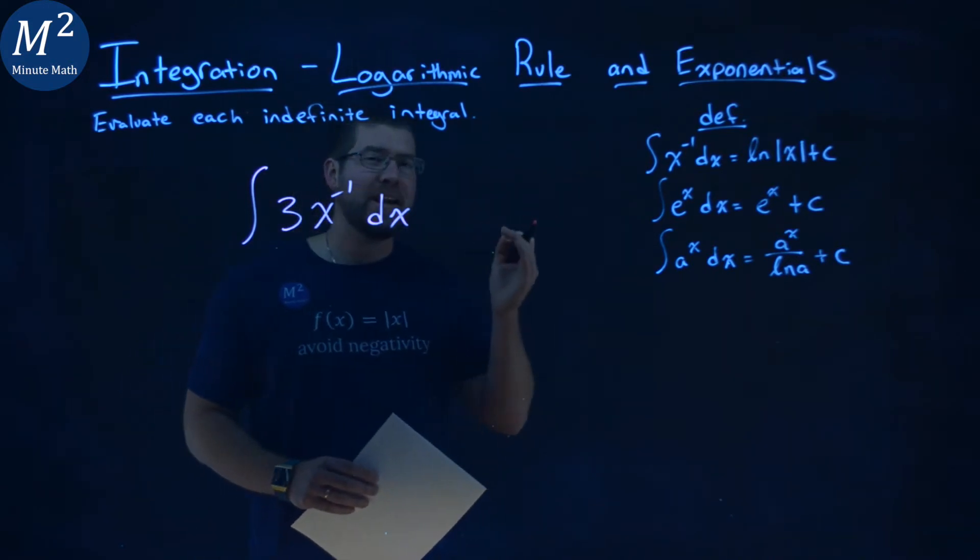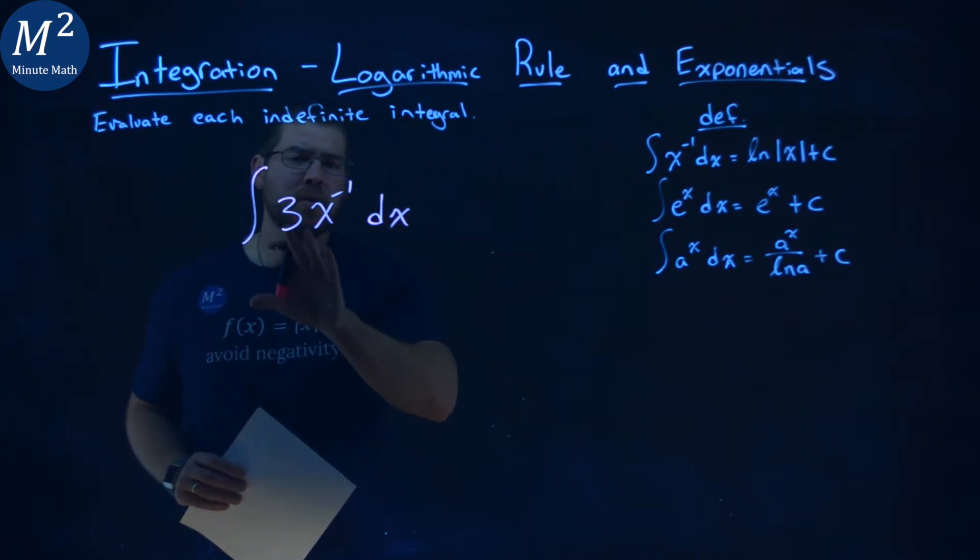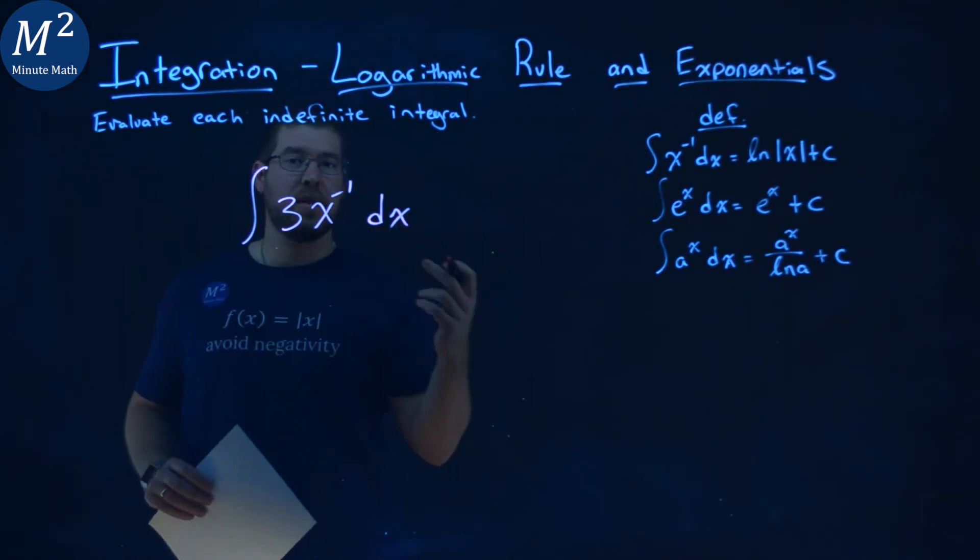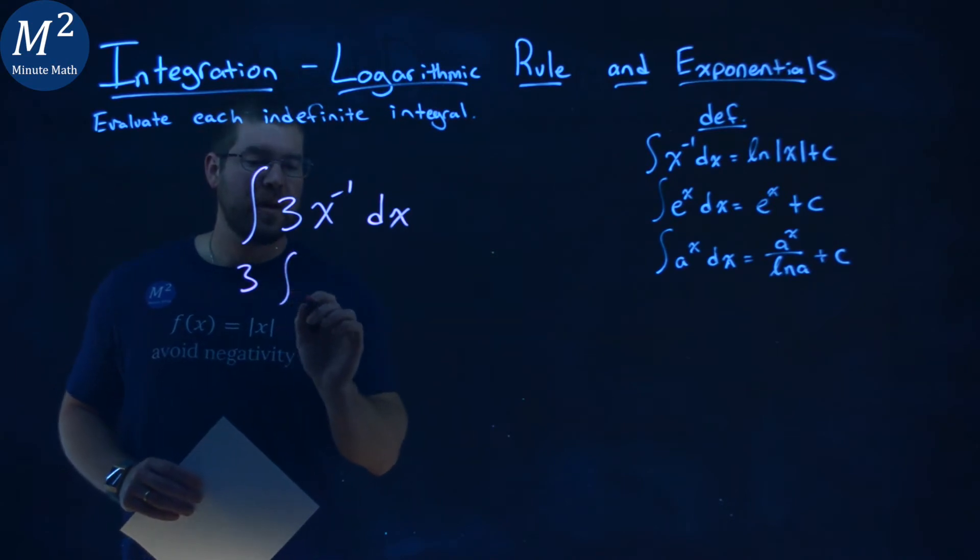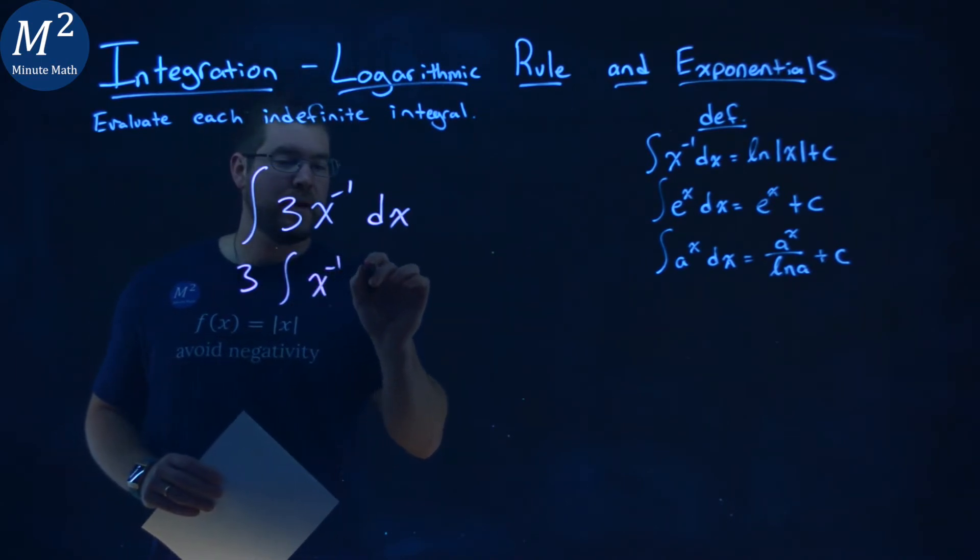Now our definitions are going to help us here. The first thing I want to do is rewrite this. I can pull out this constant that's a 3 and put it outside of the integral. So we have 3 times the integral of x to the negative 1 dx,